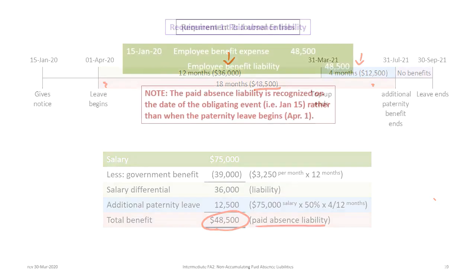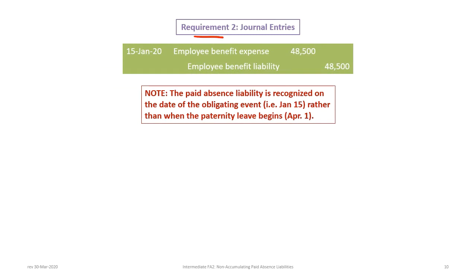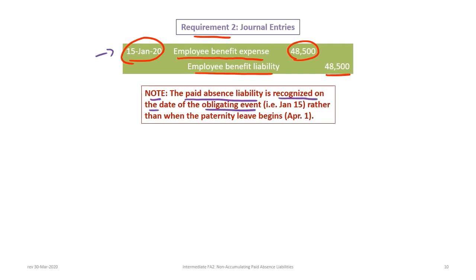For requirement two, we record the journal entry. On January 15th, 2020, we debit employee benefit expense for the total liability of $48,500 and credit an employee benefit liability account for $48,500. An important point: notice that the absence liability is recognized on the date of the obligating event, which is January 15th, 2020 — not when the paternity leave begins. It is the date the notice is provided that the liability is recorded, not when the leave begins.